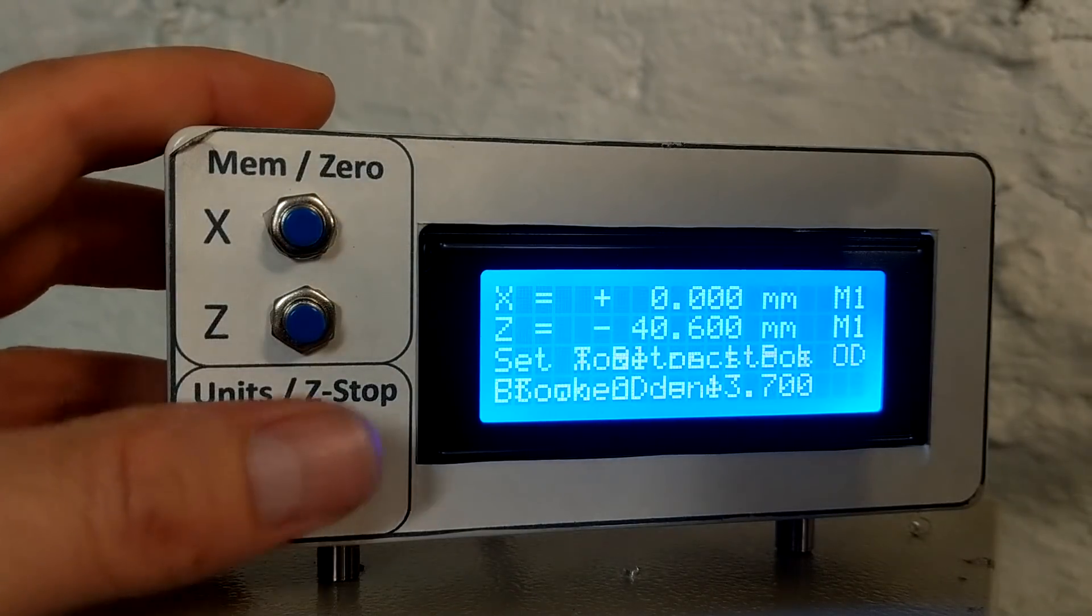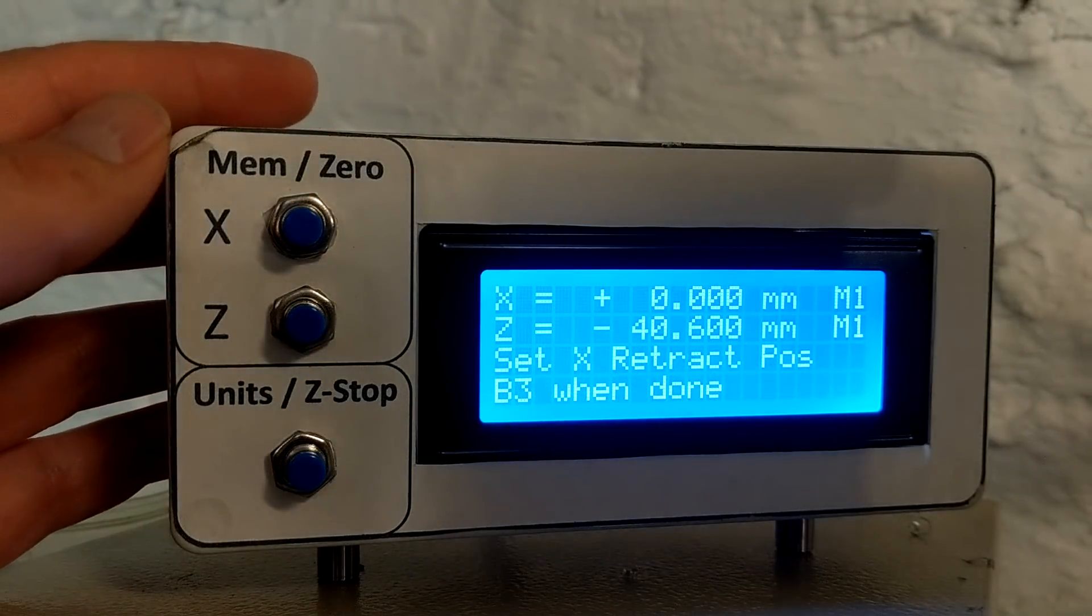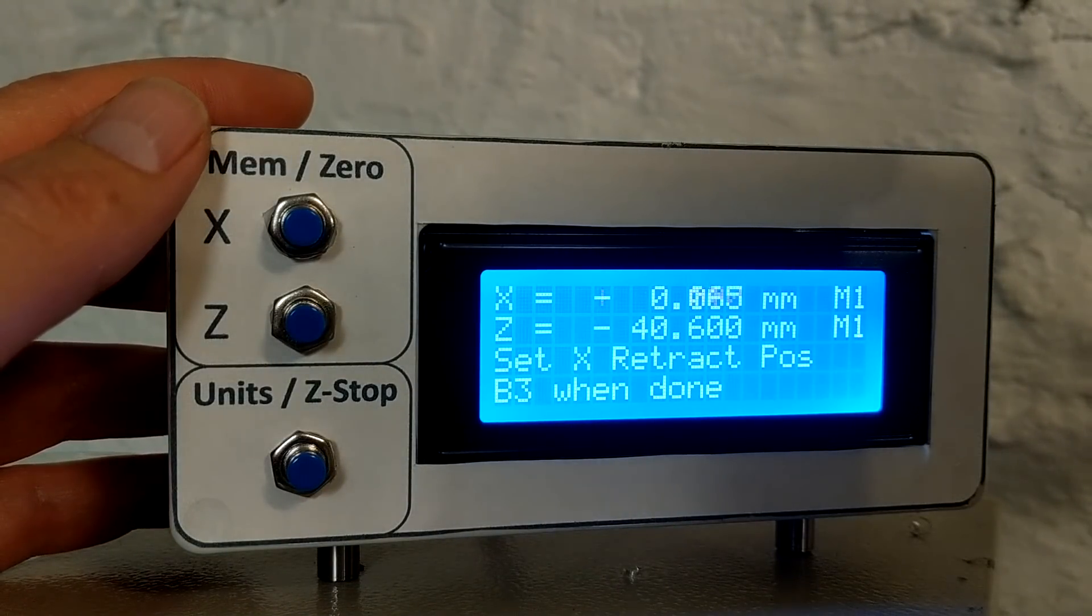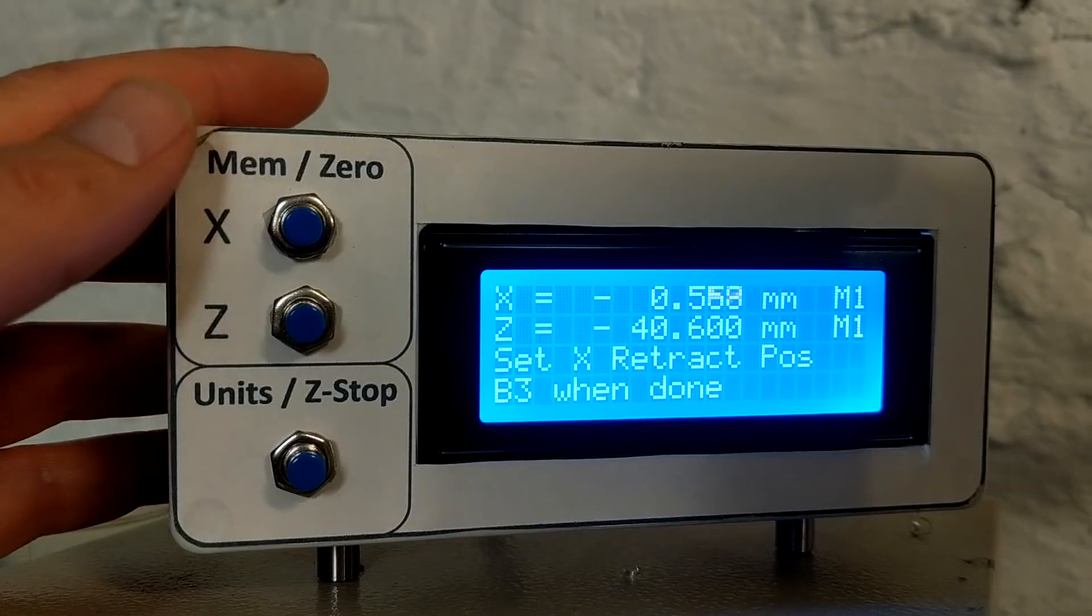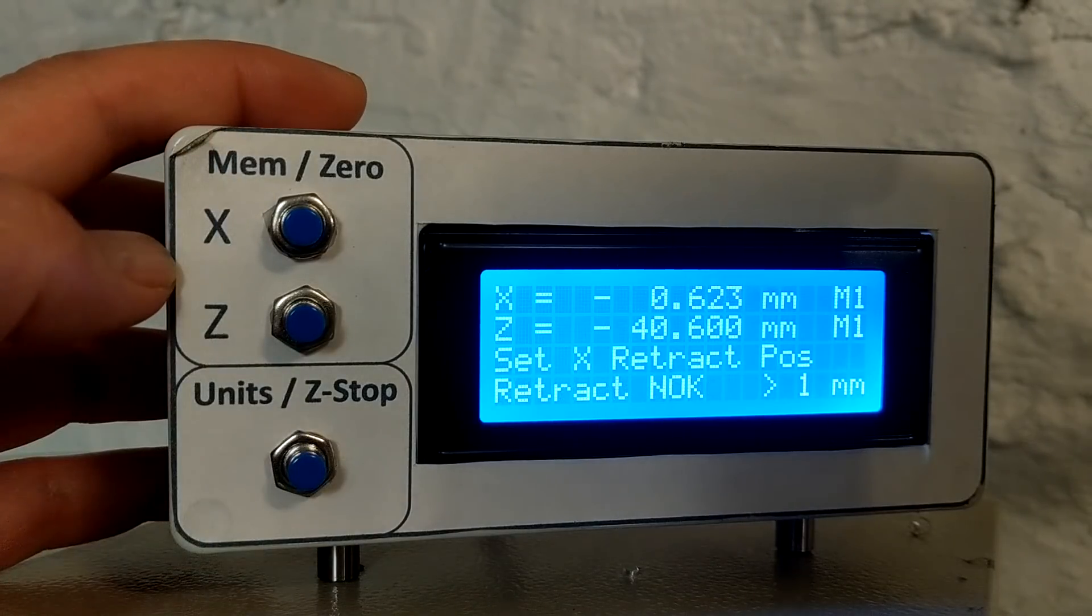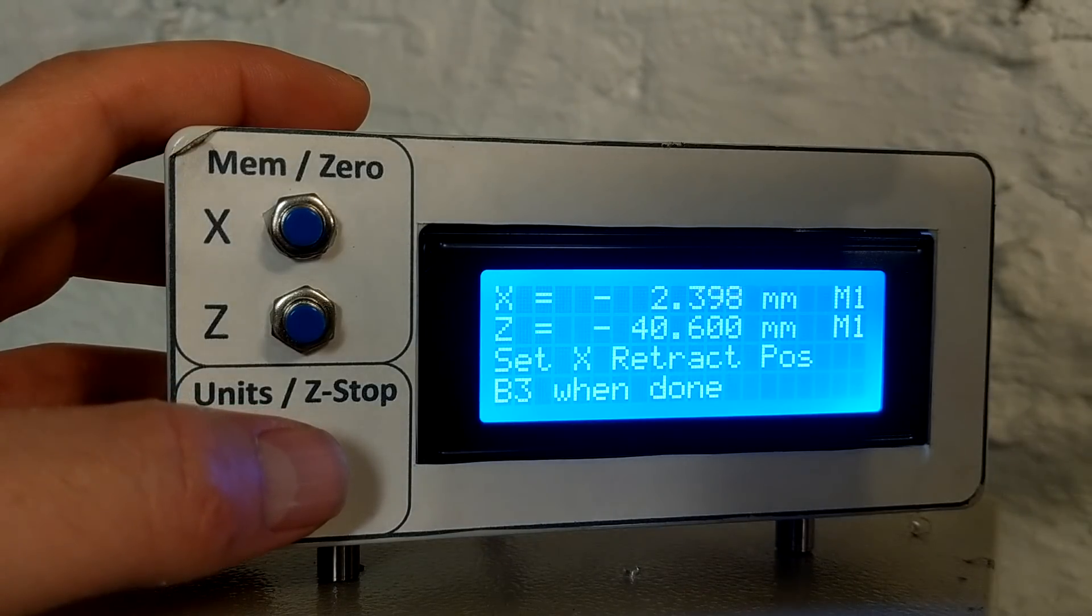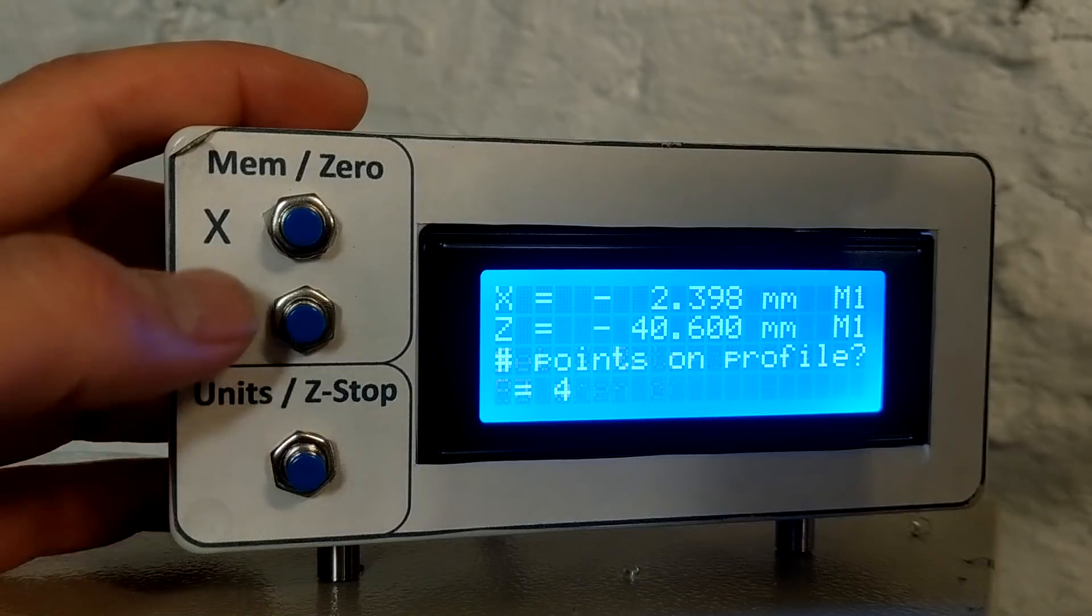So we're going to accept that. It's asking to retract the tool, set the X retract position. And we just have to pull the tool back. If I pull it back less than a millimeter, it's going to say not okay. It's got to go at least a millimeter. We're going to pull it back a little bit more, just so we can see it. Accept.